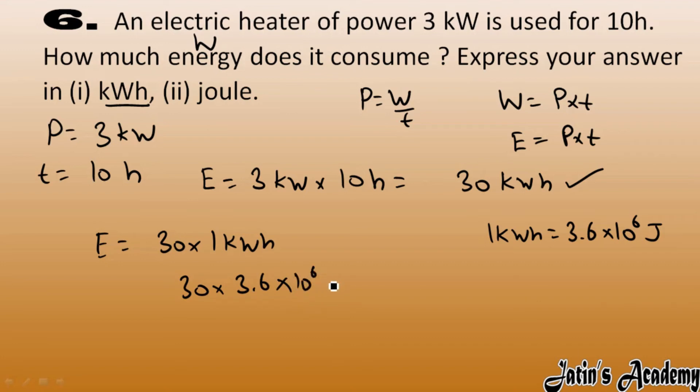So multiply this 30 into 3.6 into 10 raised to power 6 joule. When you multiply this you will get 108 into 10 raised to power 6 joule.